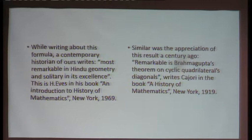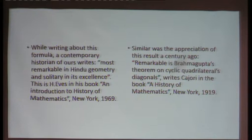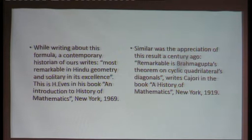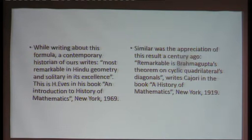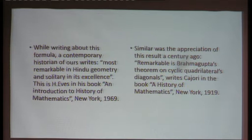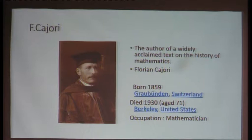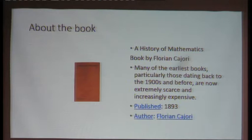While writing about this formula, a contemporary historian writes — I took it from a library book at our university — 'Most remarkable in Hindu geometry and solitary in its excellence' about this formula. This is from H. Eve's book 'An Introduction to History of Mathematics,' published in 1969. Similarly, a century ago: 'Remarkable is Brahmagupta's theorem on cyclic quadrilaterals diagonals.' The author is Cajori, whose 'History of Mathematics' is a widely acclaimed text.